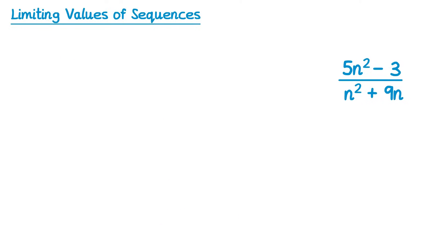Now this last one can be a little bit tricky. Now clearly the negative 3 here is going to be a term that becomes less significant, so we will ignore that. But what about the 9n on the bottom? Well, if you compare what happens to n squared and 9n, you'll get an idea.